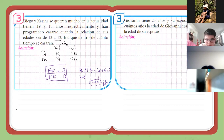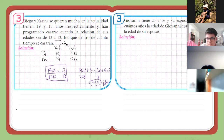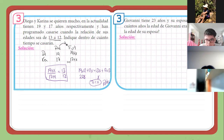Ahora sí seguimos. Me han enviado sus respuestas corregidas. Vamos a resolverlo rápidamente. Dice: Giovanni tiene 23 años y su esposa 19. ¿Hace cuántos años la edad de Giovanni era el doble de la edad de su esposa? Sería 23 menos X la edad de Giovanni hace tantos años, y 19 menos X la de su esposa. ¿Cuándo será el doble de la edad de su esposa?